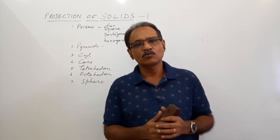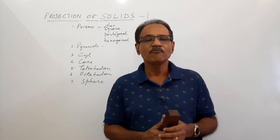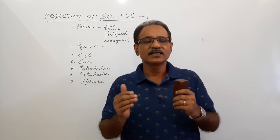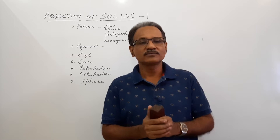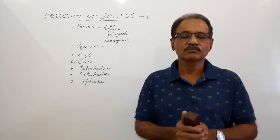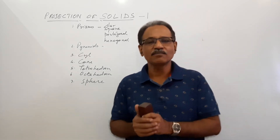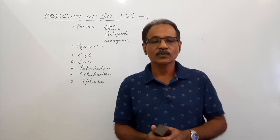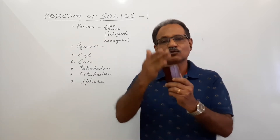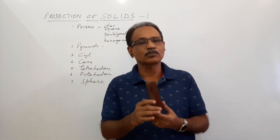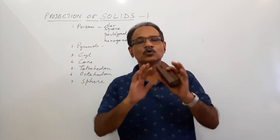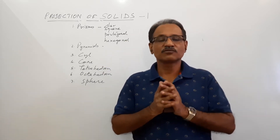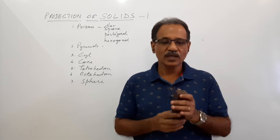Now let us consider what we are going to draw. We are going to draw prisms, pyramids, cylinder, cone and sphere. We can classify them as polyhedra and solids of revolution. Objects with flat faces and corners are polyhedra, and a smooth surface generated by rotating something is called a solid of revolution.